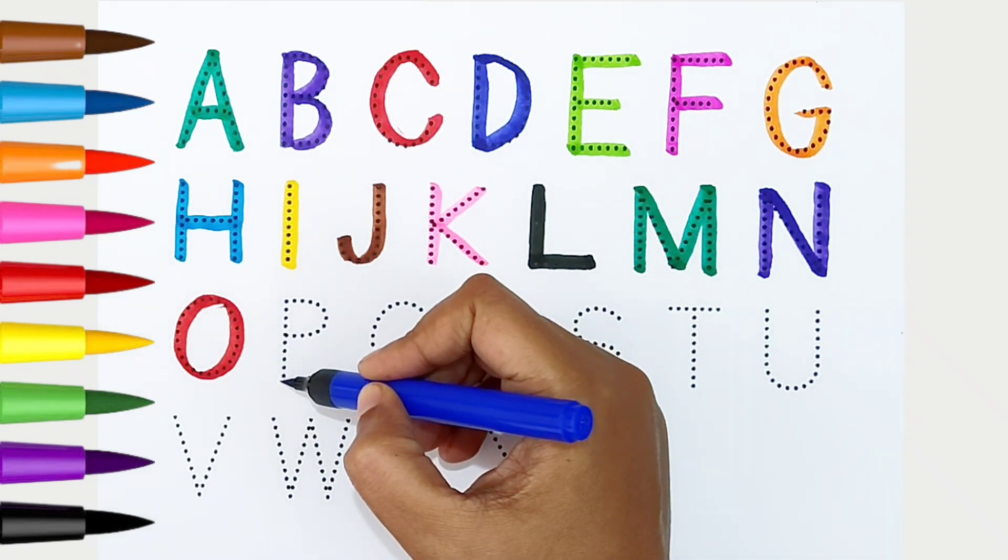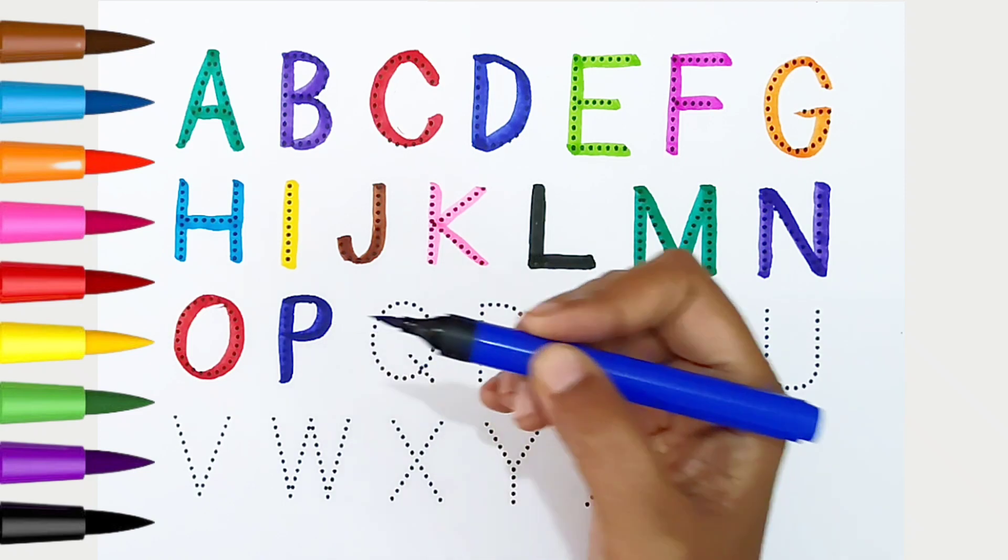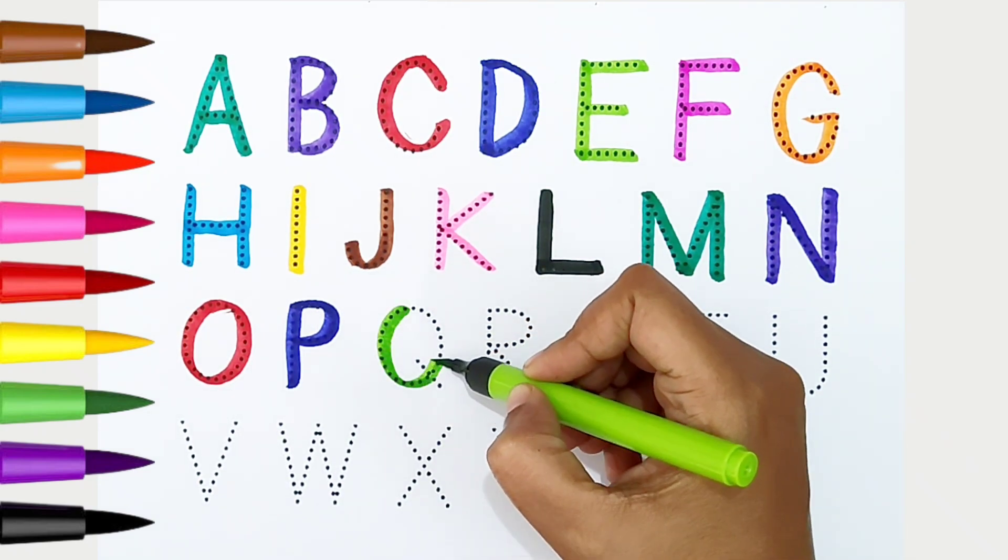P, dark blue color. P is for python. Q, light green color.